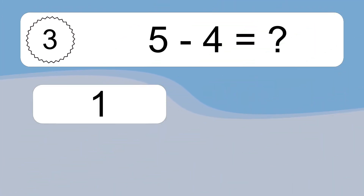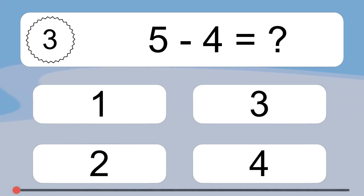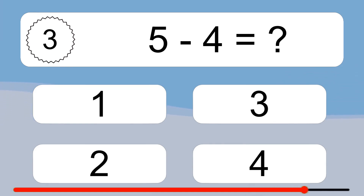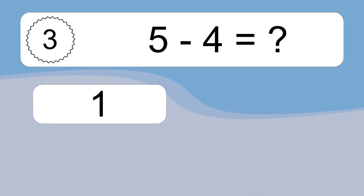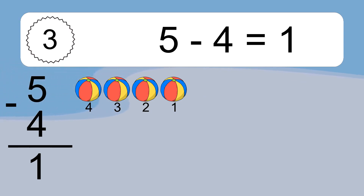5 minus 4 equals what? 5 minus 4 equals 1. Let's count it. 4, 3, 2, 1.